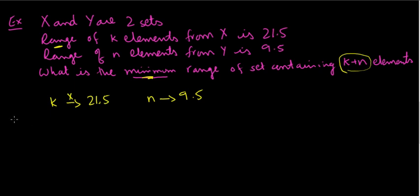They say the range for K elements from X is 21.5. Now there are three scenarios here. So let's look at these scenarios one by one. The first scenario. Let me represent the range by this line. So let's say this is my K set, the K elements whose range is 21.5. So you have your lower bound and your upper bound. The difference between those two is 21.5. So that's for K elements.